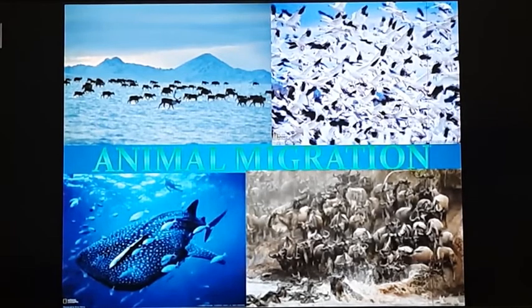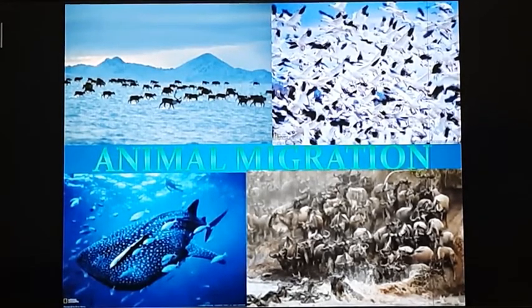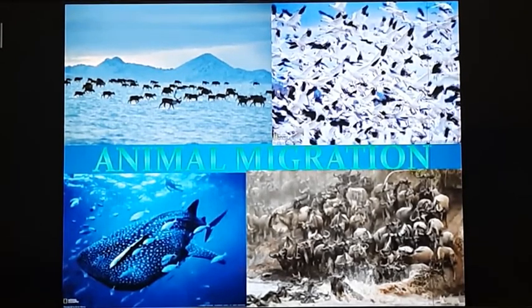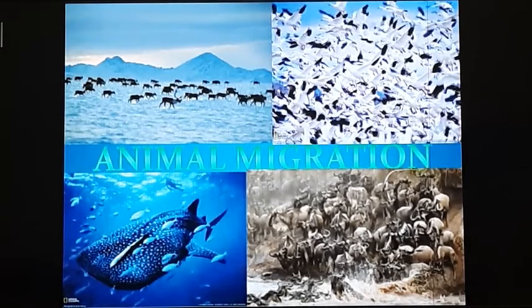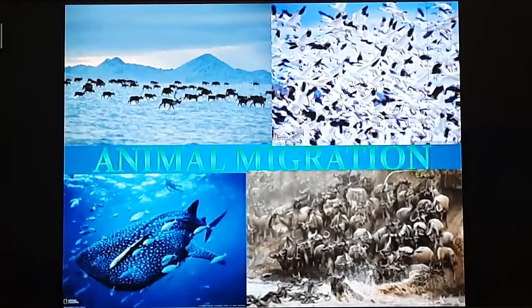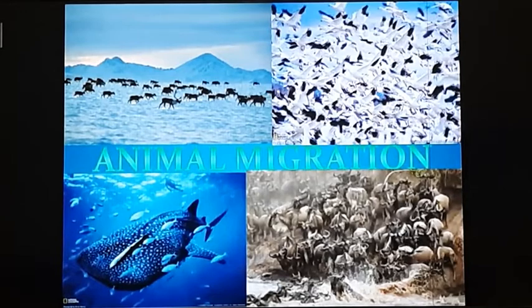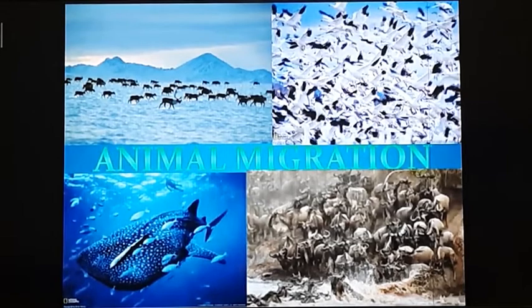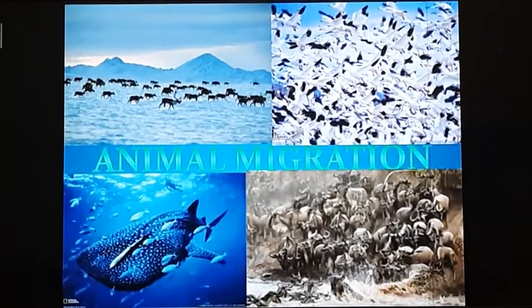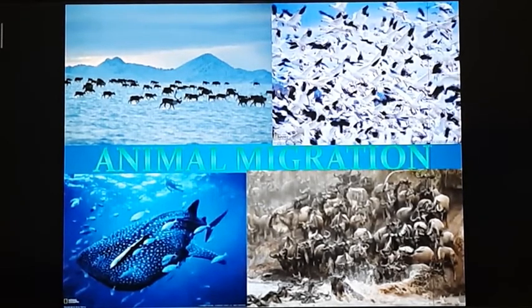Now we come to the next topic: animal migration. Some animals migrate from one region to another due to lack of food, lack of breeding places, and due to severe climatic changes in their habitat. Sometimes their habitat becomes very cold, and to escape from extreme cold, they move to another place for a few days or months. When the weather conditions become normal, they come back to their habitat. Migration is shown by birds, water animals, and wild animals.